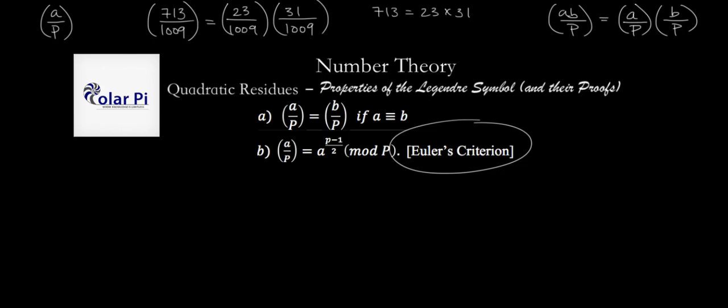And the first video on Euler's criterion, I introduced it and looked at some very basic examples. And the second video, we looked at harder examples. And in the third video on Euler's criterion, we proved it. So we're not going to prove the second property, which is Euler's criterion, because we already proved it.